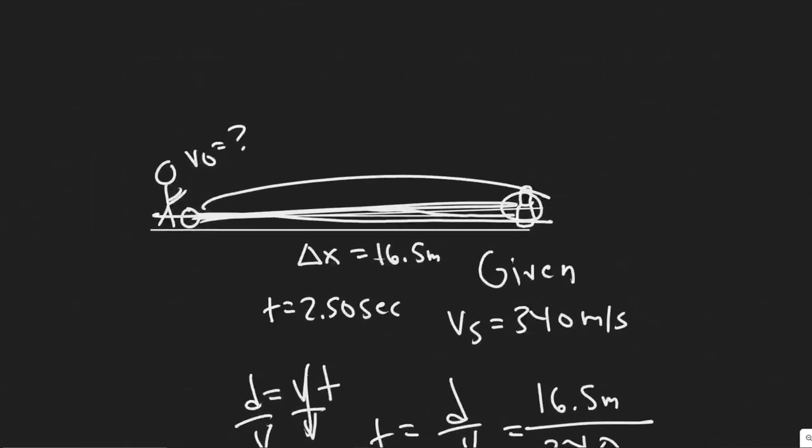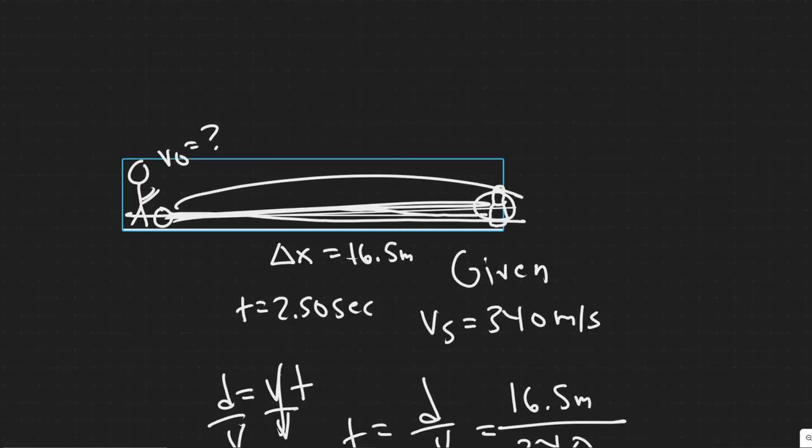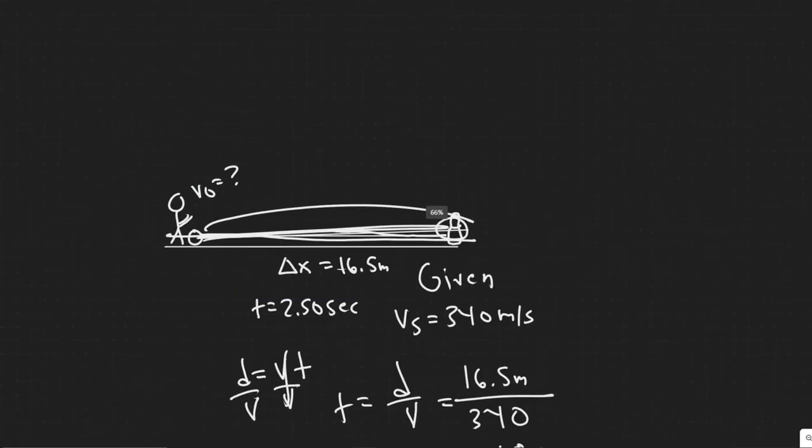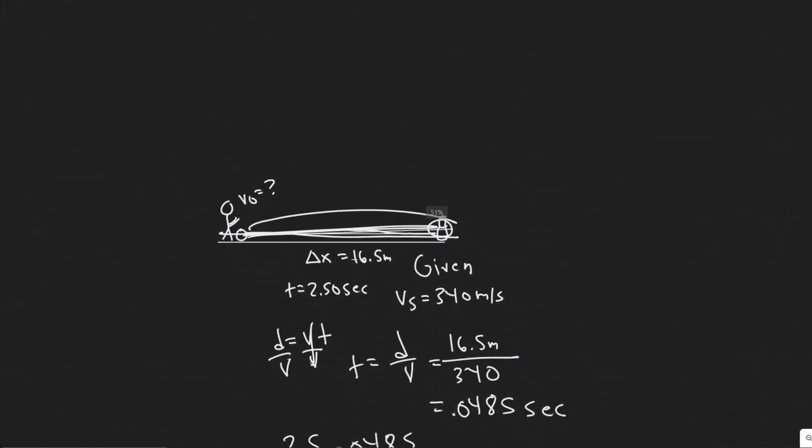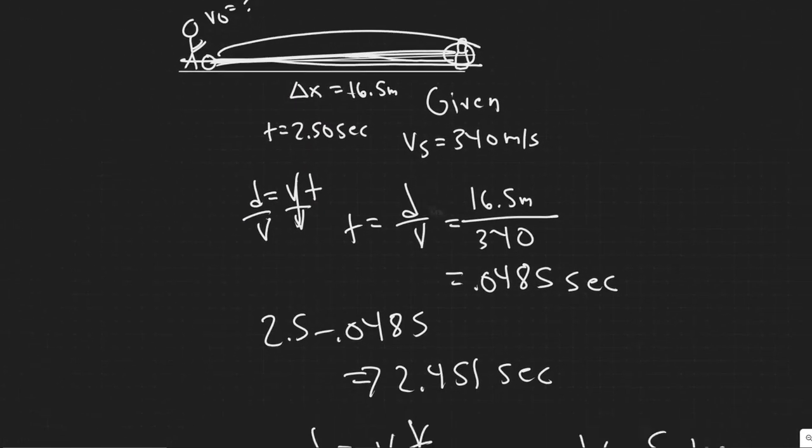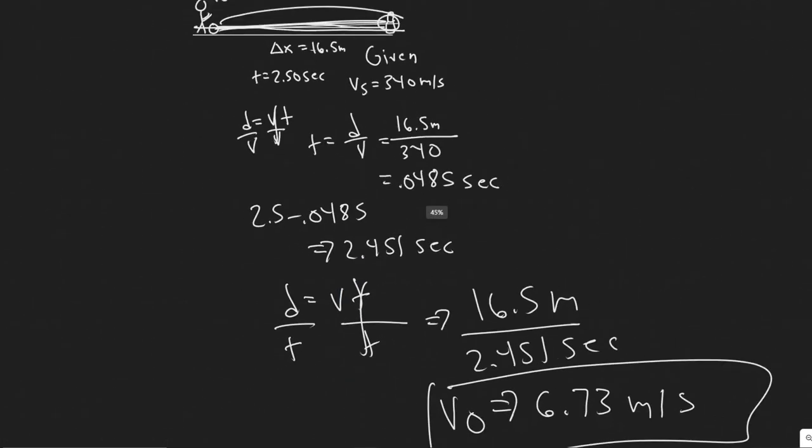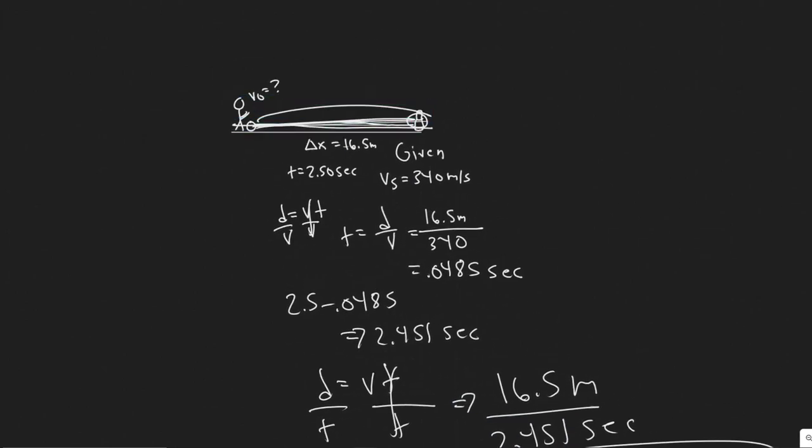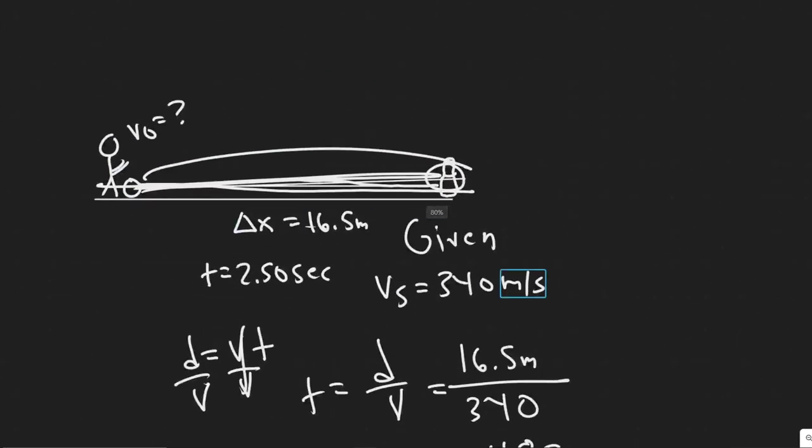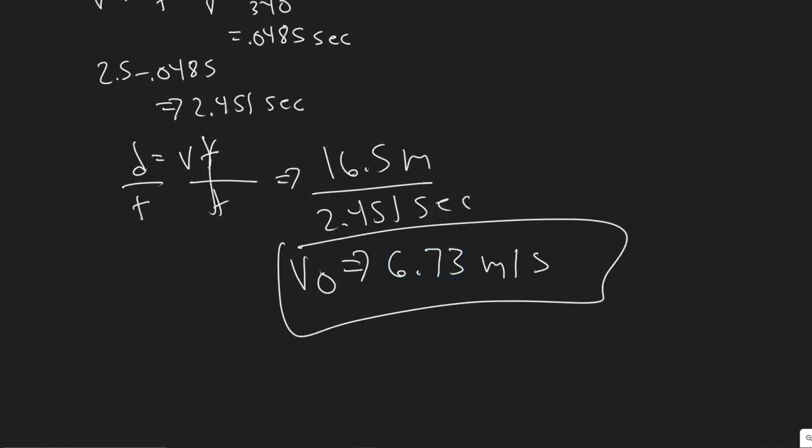So just keep in mind how we did this problem. All we did was we knew we had to subtract the time that it took to come back. So we had to calculate that using the speed of sound. And then we were just able to use this basic formula, distance equals velocity times time. Because once we had the time, it just becomes pretty easy. So this right here is going to be your answer to this problem. And hopefully you found this video useful. Thank you.